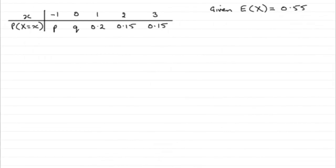Okay, now for the first part then, we're given this probability distribution table and also that E(X), the expected mean, is going to be 0.55 and we've got to work out p and q.